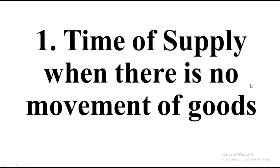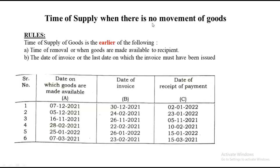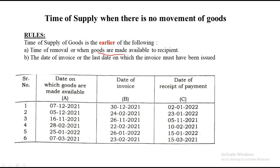Time of supply when there is no movement of goods. Very important — if there is no movement of goods, how to solve the sum and how to identify that particular sum. There are some rules that need to be noted down. The time of supply for goods when there is no movement of goods is the earlier of the following: time of removal or when the goods are made available, and date of invoice. The date from where the goods are made available and the invoice date — whichever is earlier will be your time of supply.